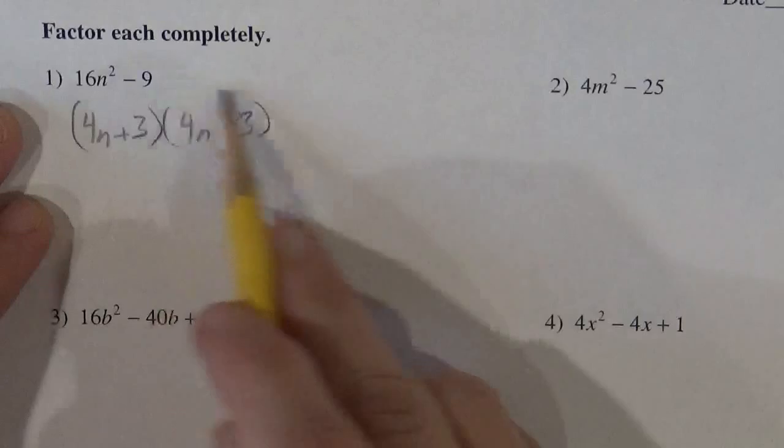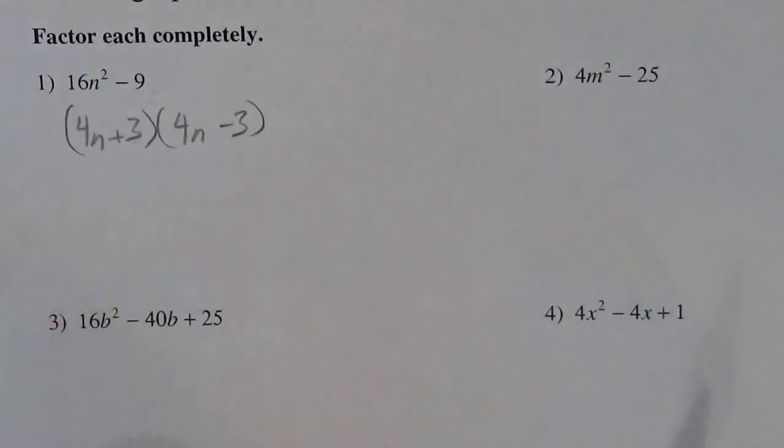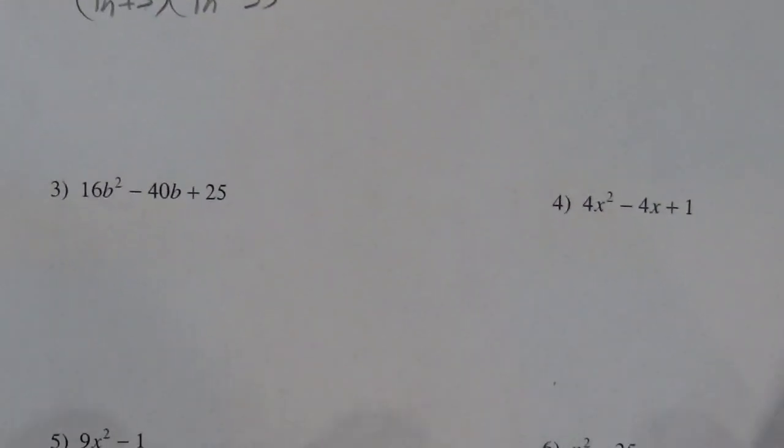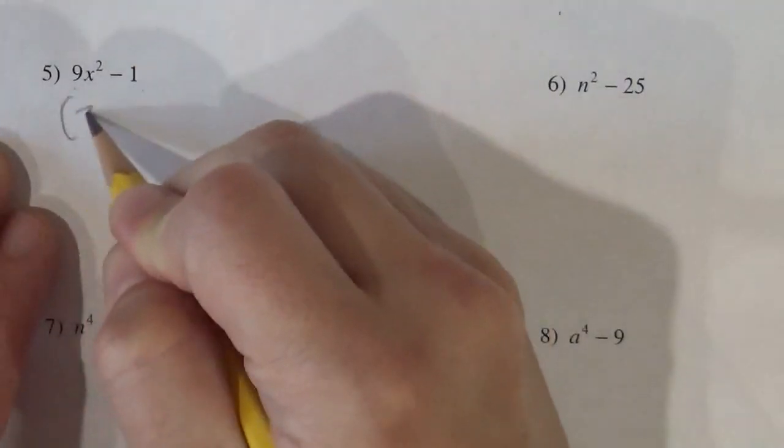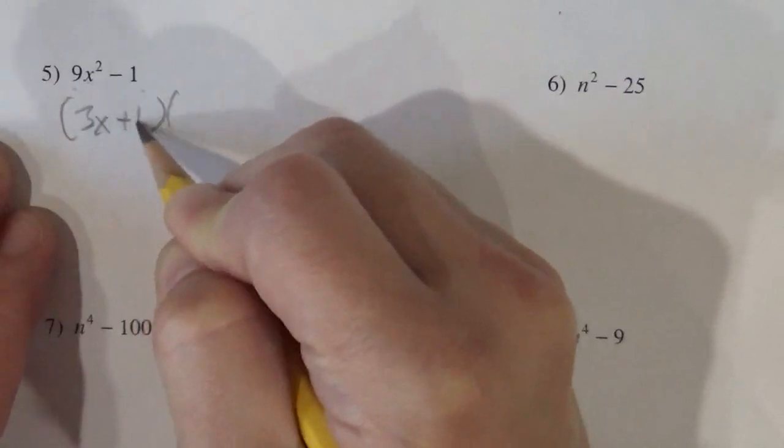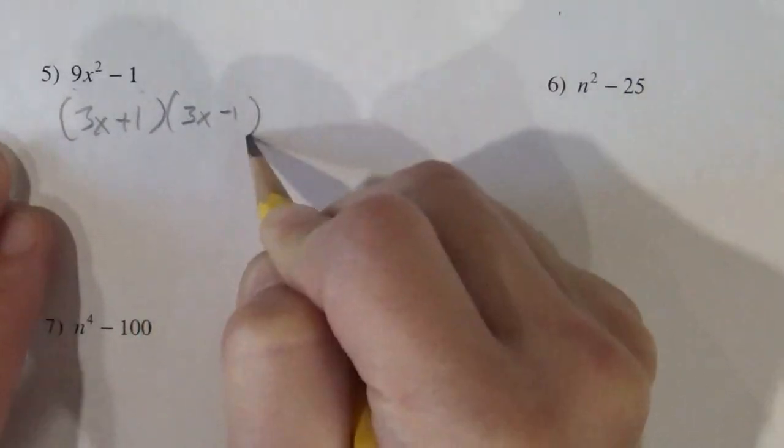If you were to FOIL this out, you would get that. I'm going to do a couple more quick ones and then show you a bit more of the reasoning. So this guy here, they're both perfect squares. So this is 3x plus 1 and 3x minus 1.